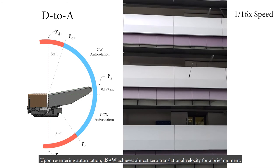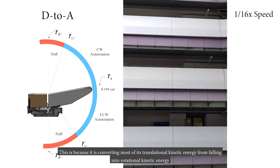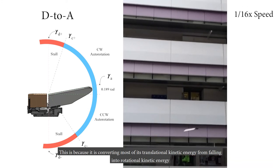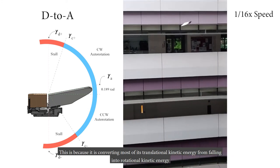D-Saw achieves almost zero translational velocity for a brief moment. This is because it is converting most of its translational kinetic energy from falling into rotational kinetic energy.